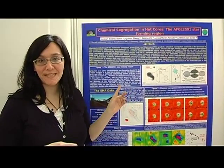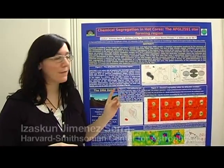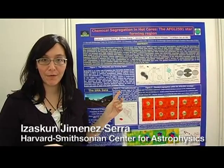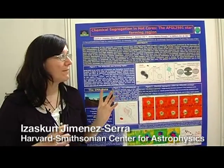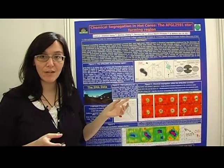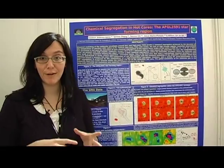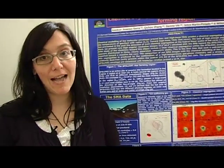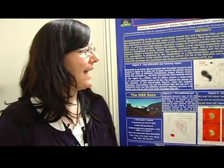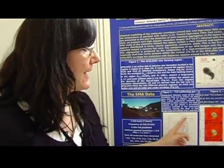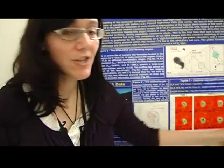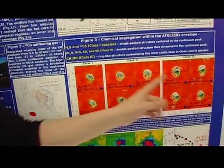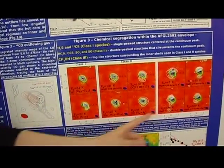Here we are presenting some recent results from this millimetre array. There is a high-mass star-forming region which shows very rich chemistry. These regions are very different from the low-mass star-forming regions, such as where our sun formed. What we have found is a chemical segregation, which means we see different morphologies for different molecular species.